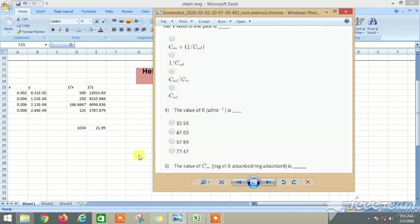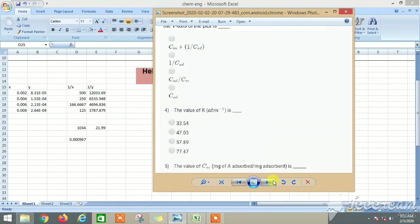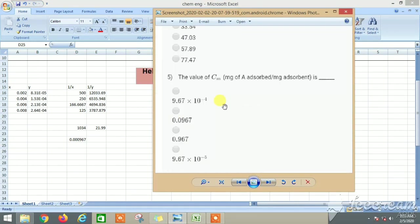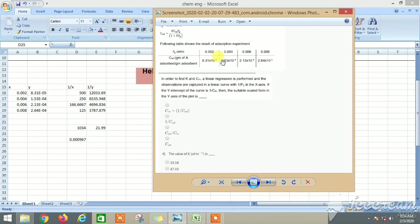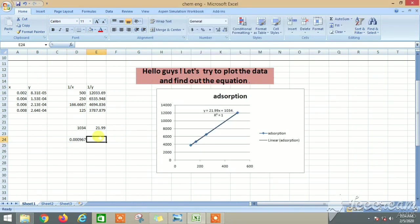And value of C_m we can get directly is equal to 1 by this. This is the value of C_m. If you see, then option A is the value of C_m, and if you go to value of K, the value of K is equal to this.